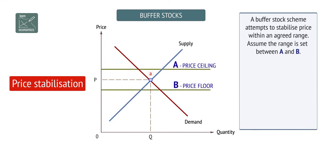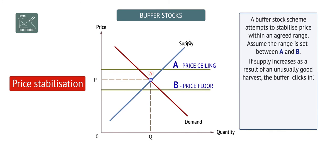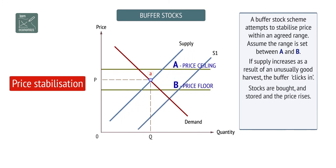If supply increases as a result of a good harvest, the buffer stock kicks in. When production is high, the excess is bought and stored. The price then rises.